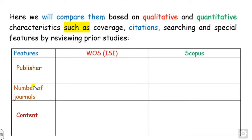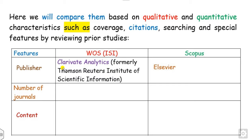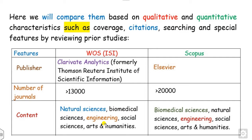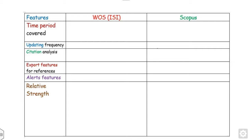As I discussed, Web of Science's publisher is Clarivate and Scopus is Elsevier. The number of journals in Web of Science is more than 13,000, while Scopus has more than 20,000. The content in Web of Science is natural science, engineering, social science, arts and humanities, while Scopus includes biomedical science, natural science and others. You can also see differences with respect to time period, frequency, analytics and so on.